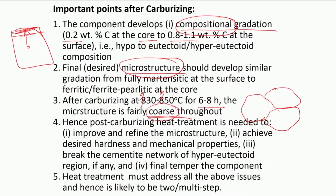This coarse microstructure needs to be broken and converted into finer microstructure, so we need grain refinement. For all these reasons - the coarsened structure and taking care of the gradation of microstructure and composition - we require certain post-carburizing heat treatment so that we improve and refine the microstructure, achieve desired hardness and mechanical properties, and break the cementite network.